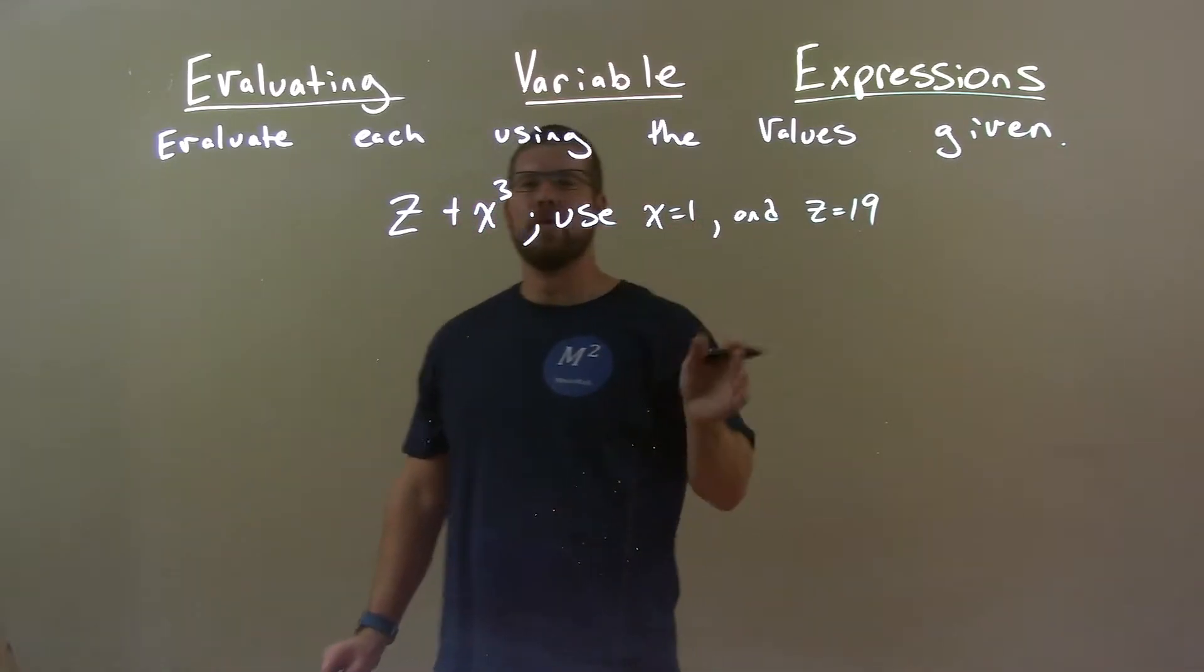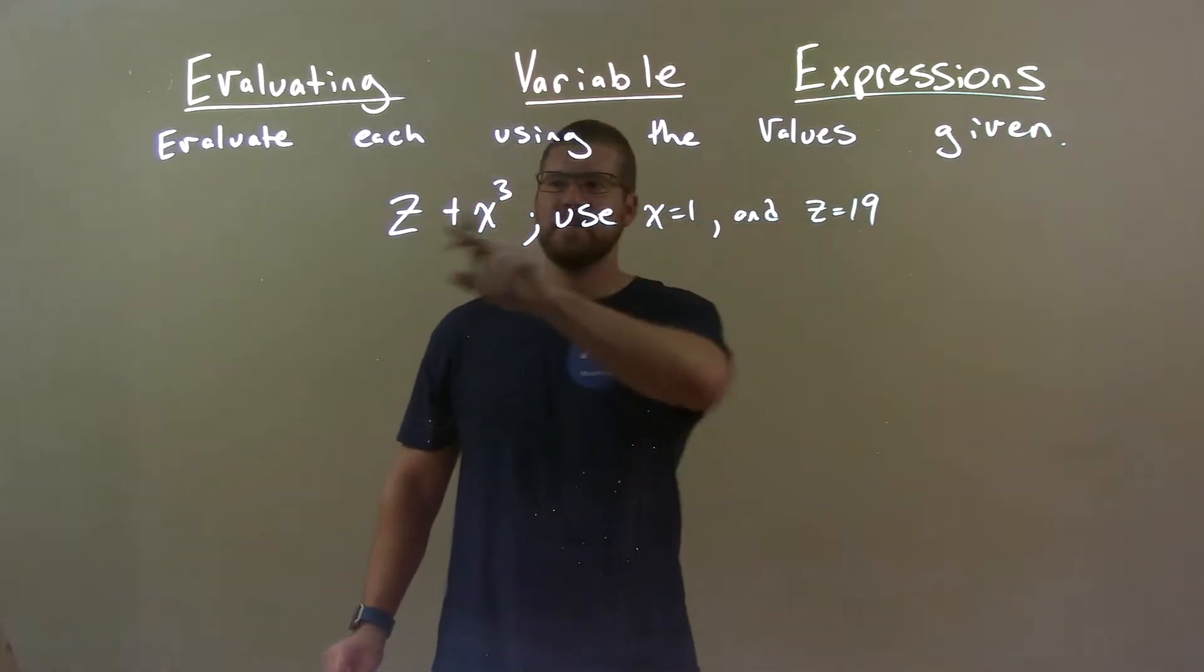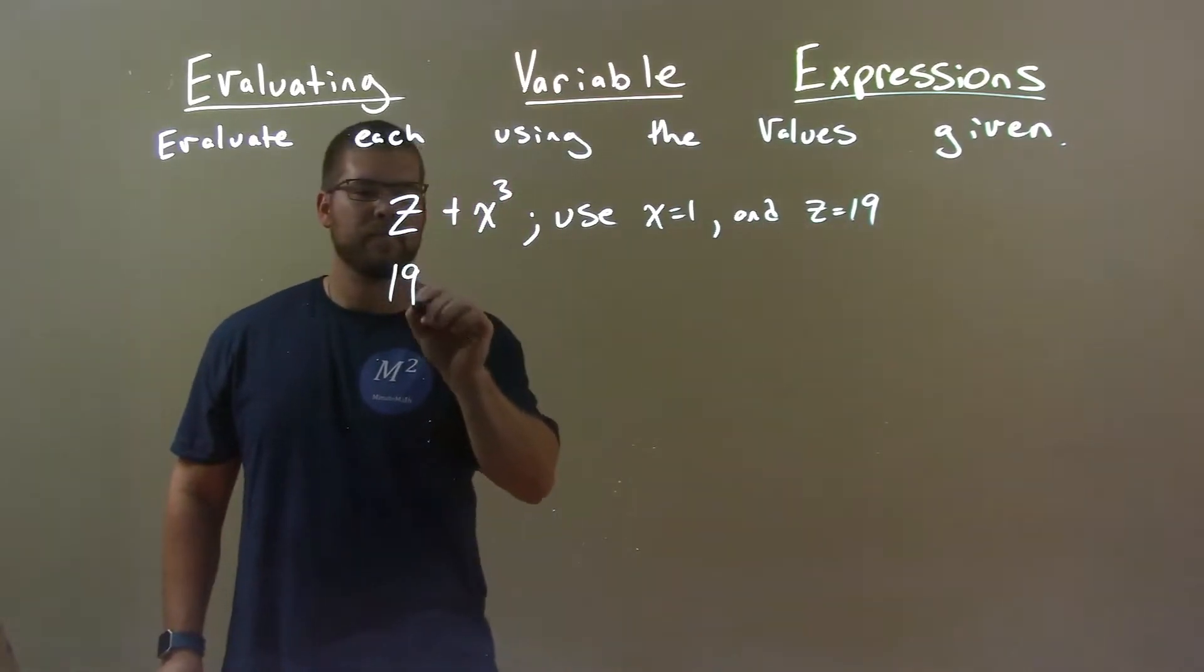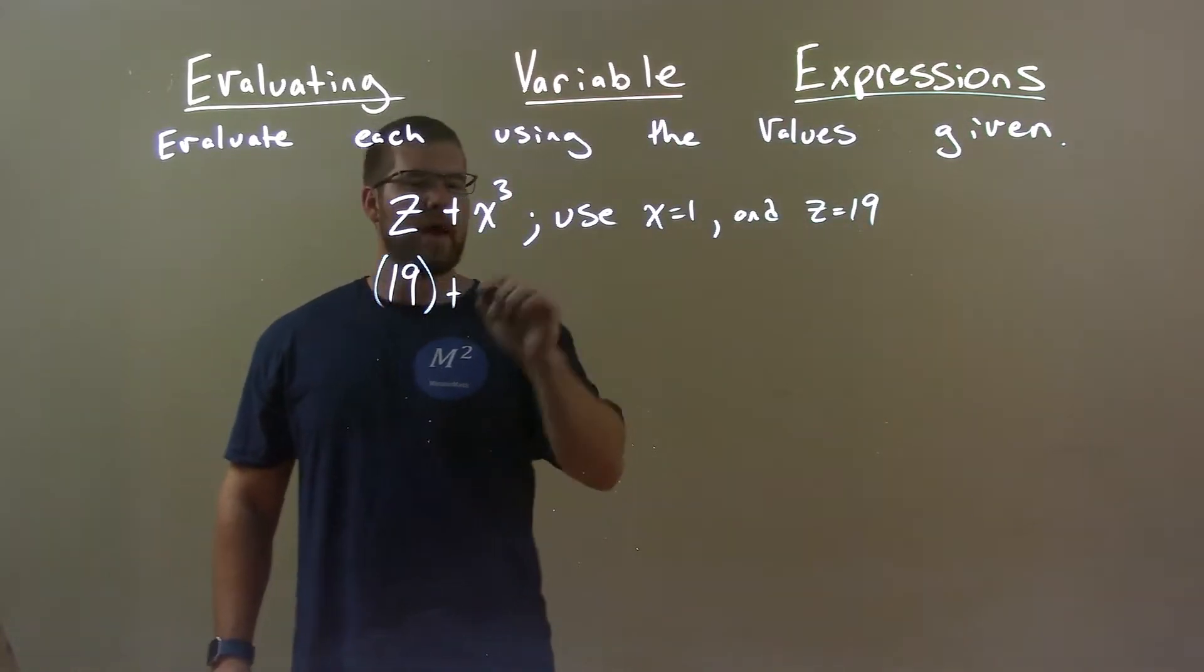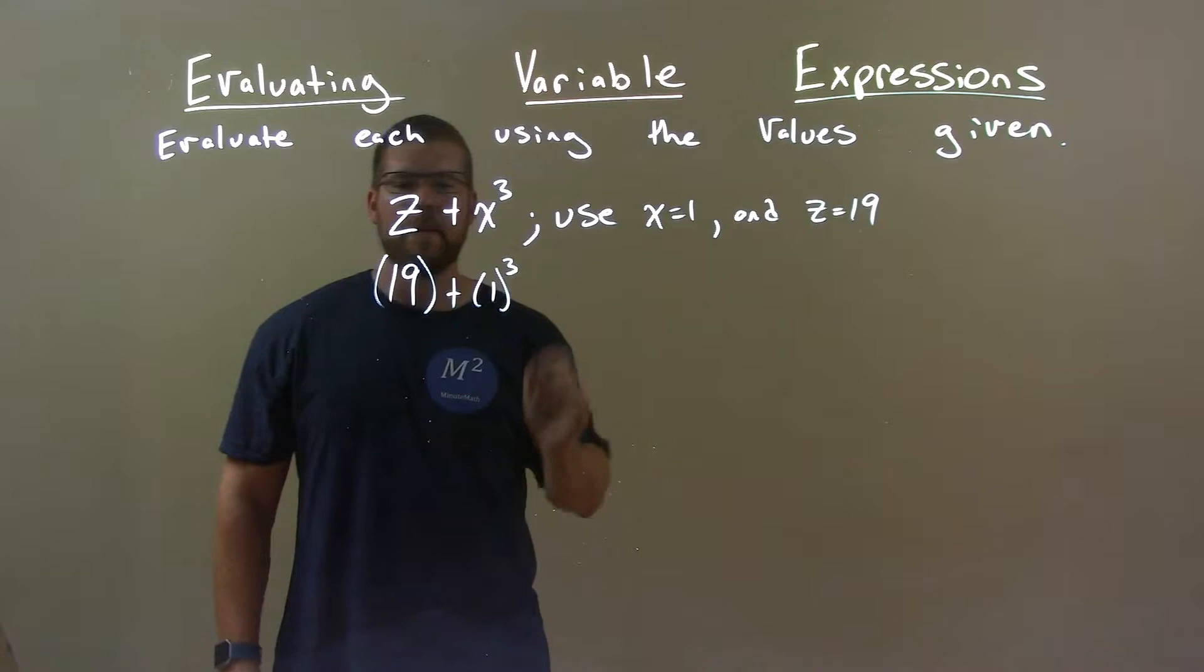Substitute the numbers for their corresponding variable. z is 19, plus x is 1 to the third power.